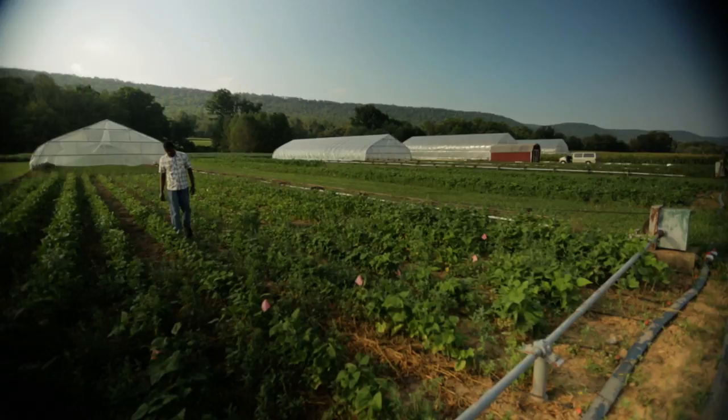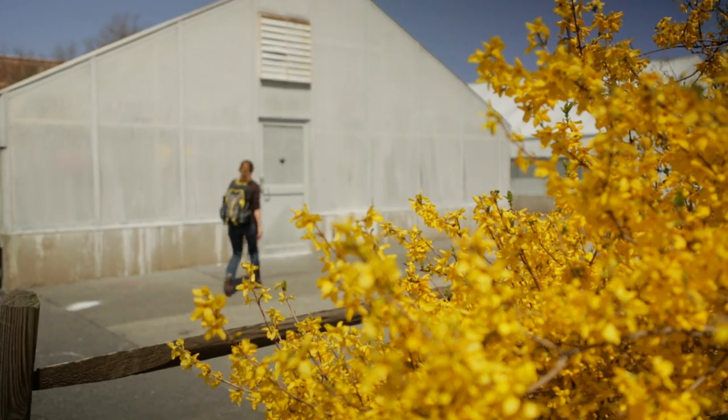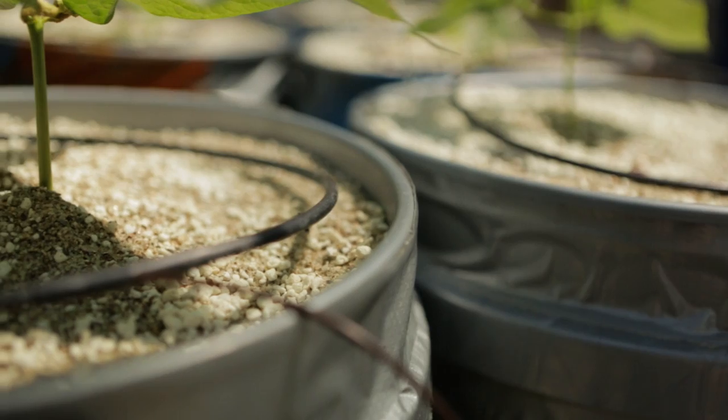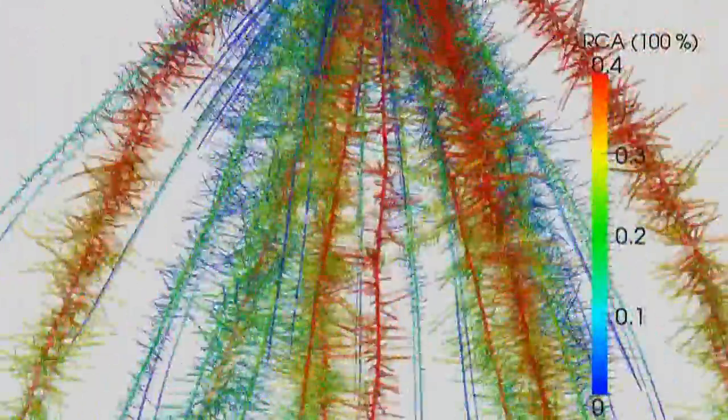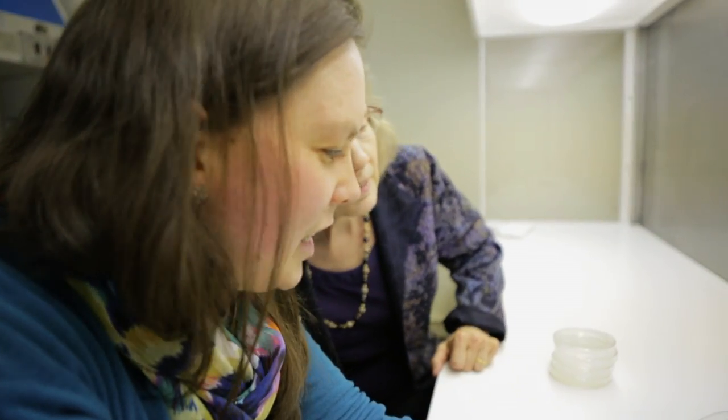The team studies what the rest of us don't see, the very important work going on underneath the ground that enables the growth of healthier, higher producing crops. What type of roots work best with little water? Or lots of water, but few nutrients?